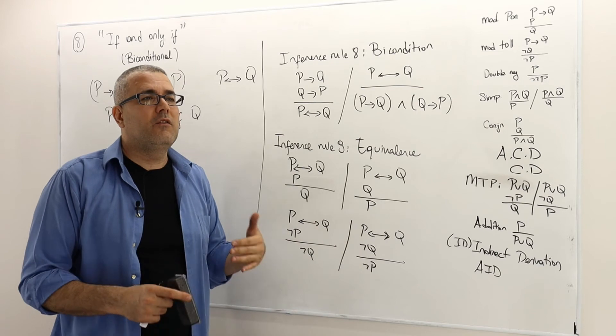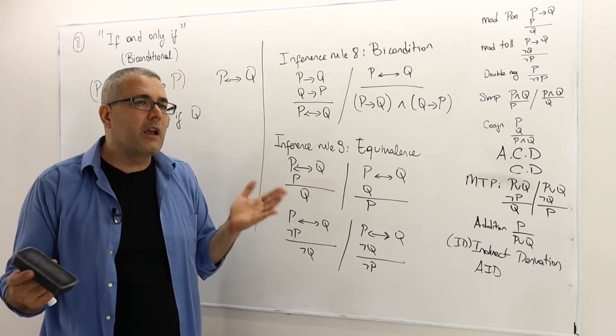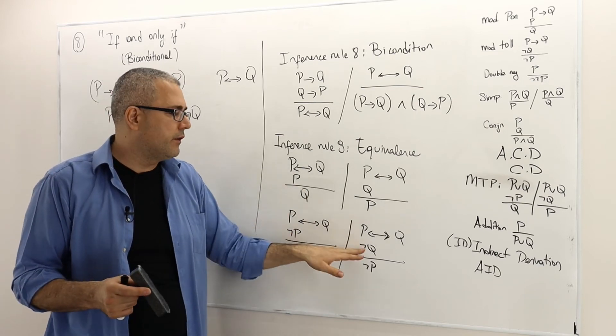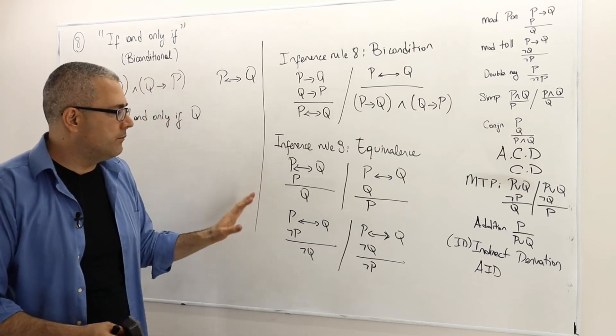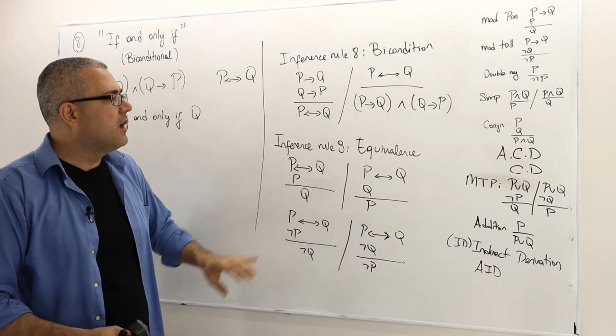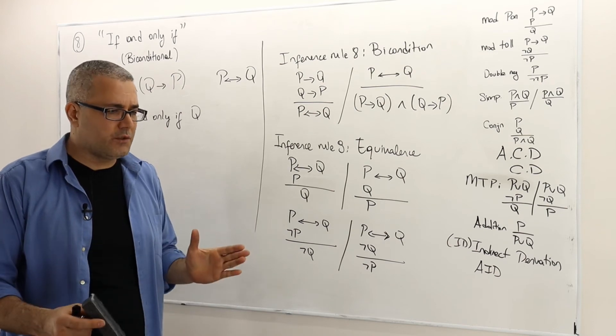And similarly, if p if and only if q is true, I mean if p and q are equivalent, and if q is false, p must be false as well. So this is the inference rule nine, which is called equivalence.